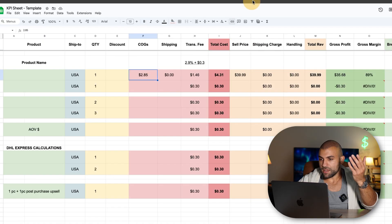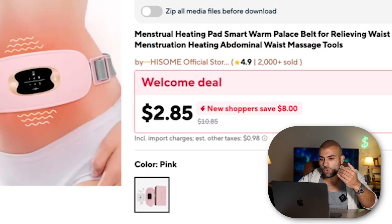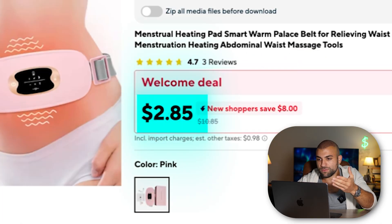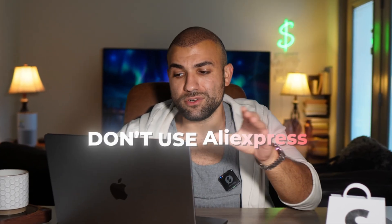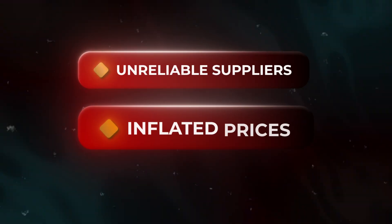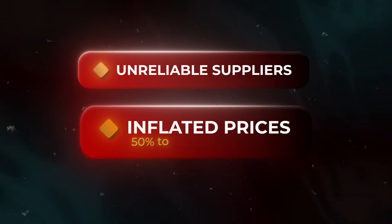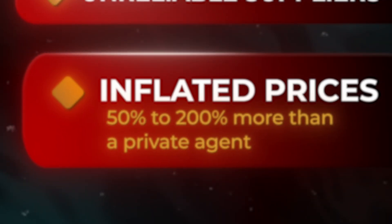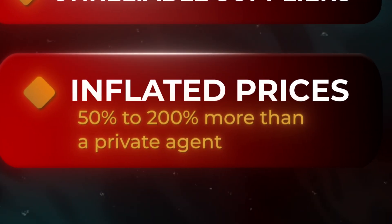Let's say we have a $2.85 cost for the product — that's if we're using AliExpress. A lot of people make the mistake of using AliExpress for dropshipping because suppliers are unreliable and costs are often inflated. You're talking about spending anywhere from 50% to 200% more than you would with a private dropshipping agent.